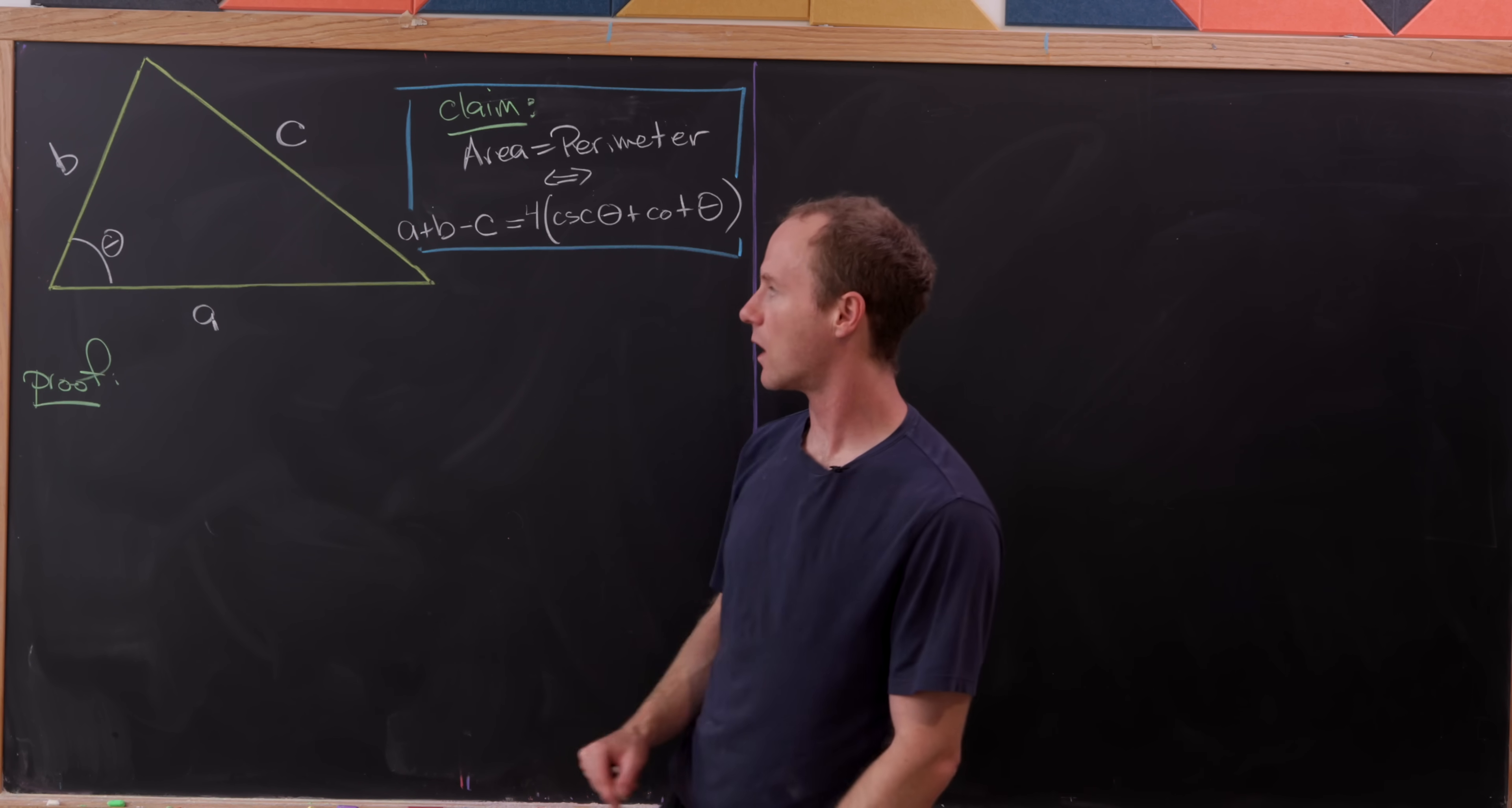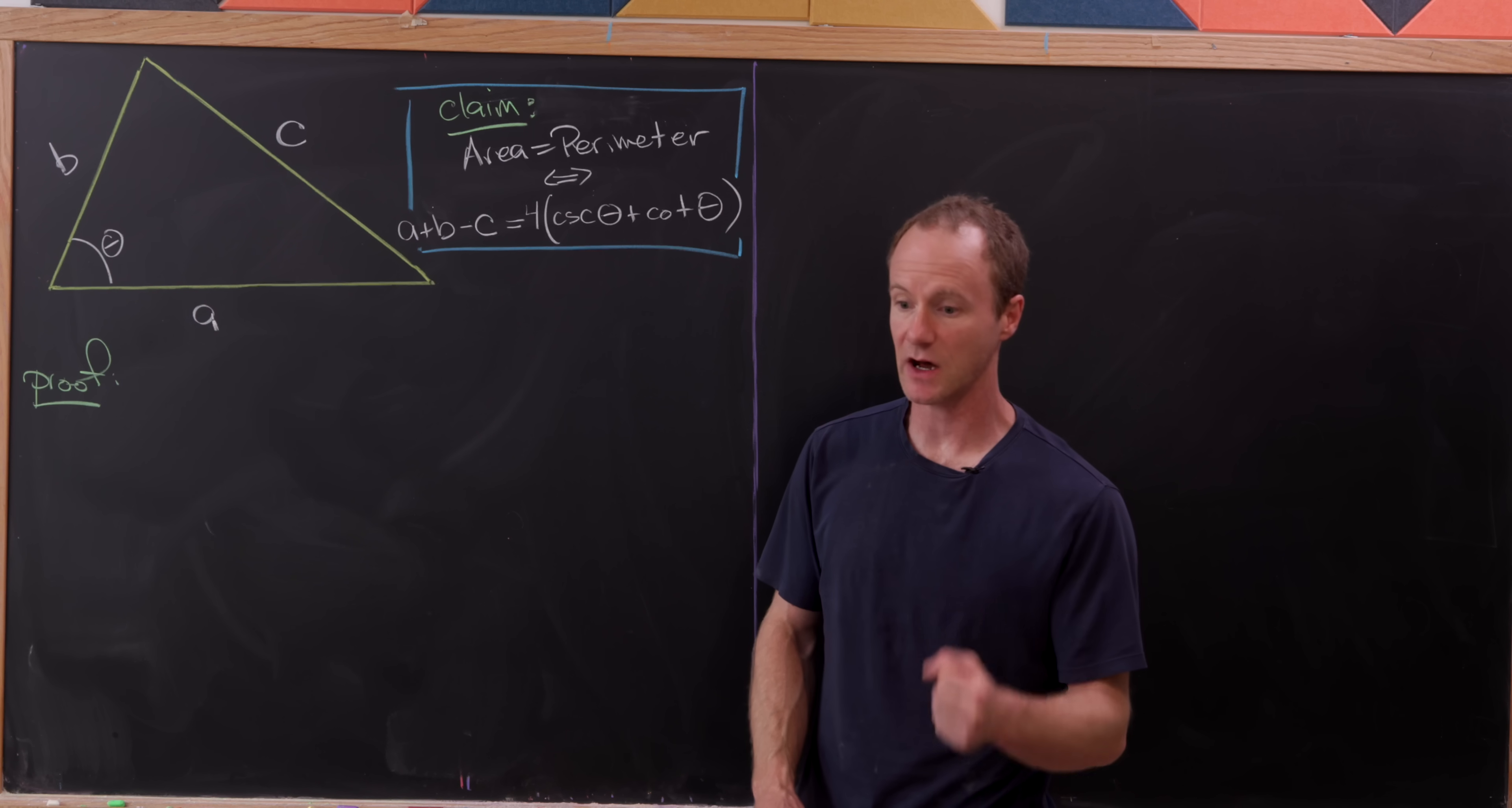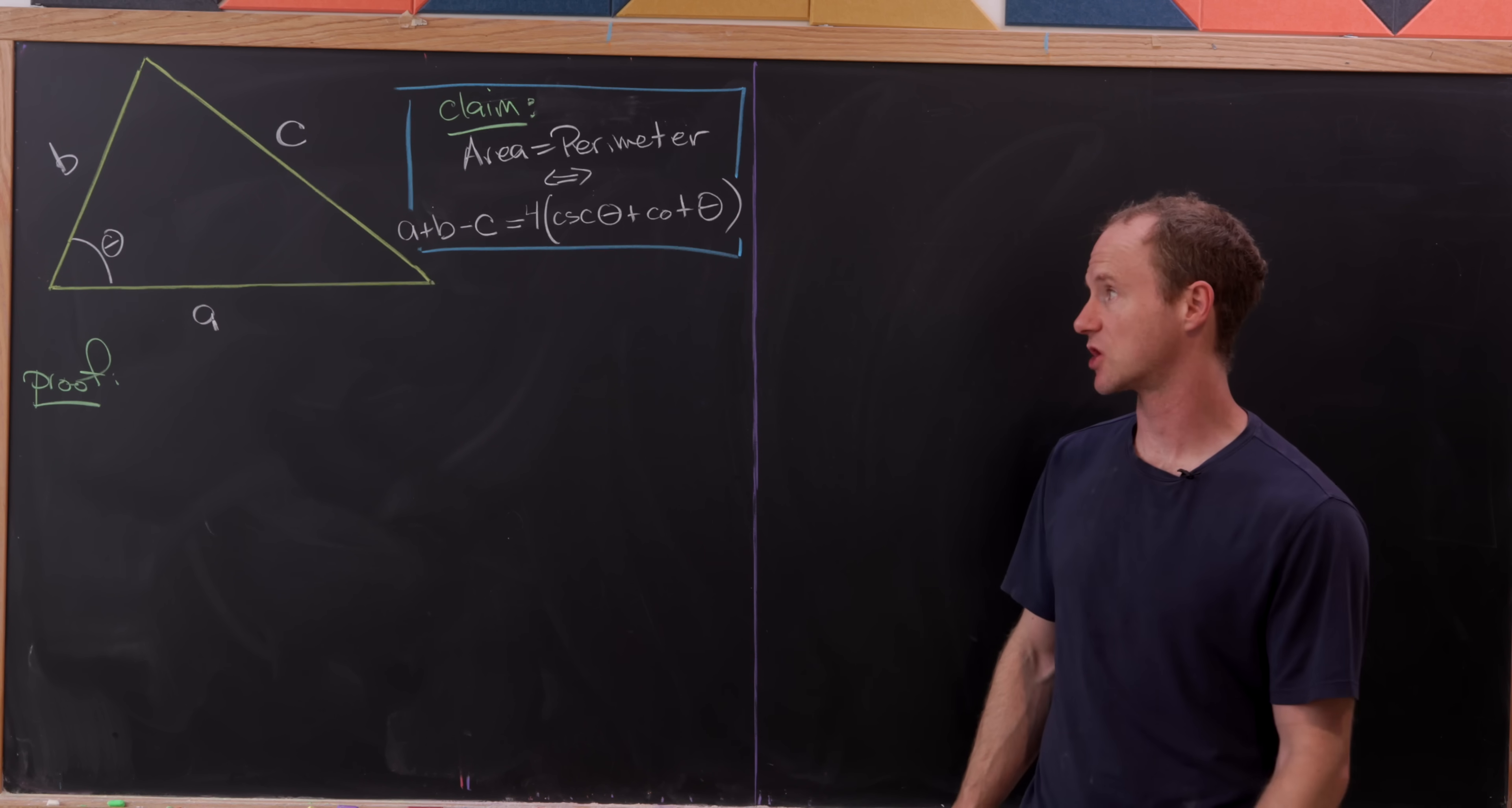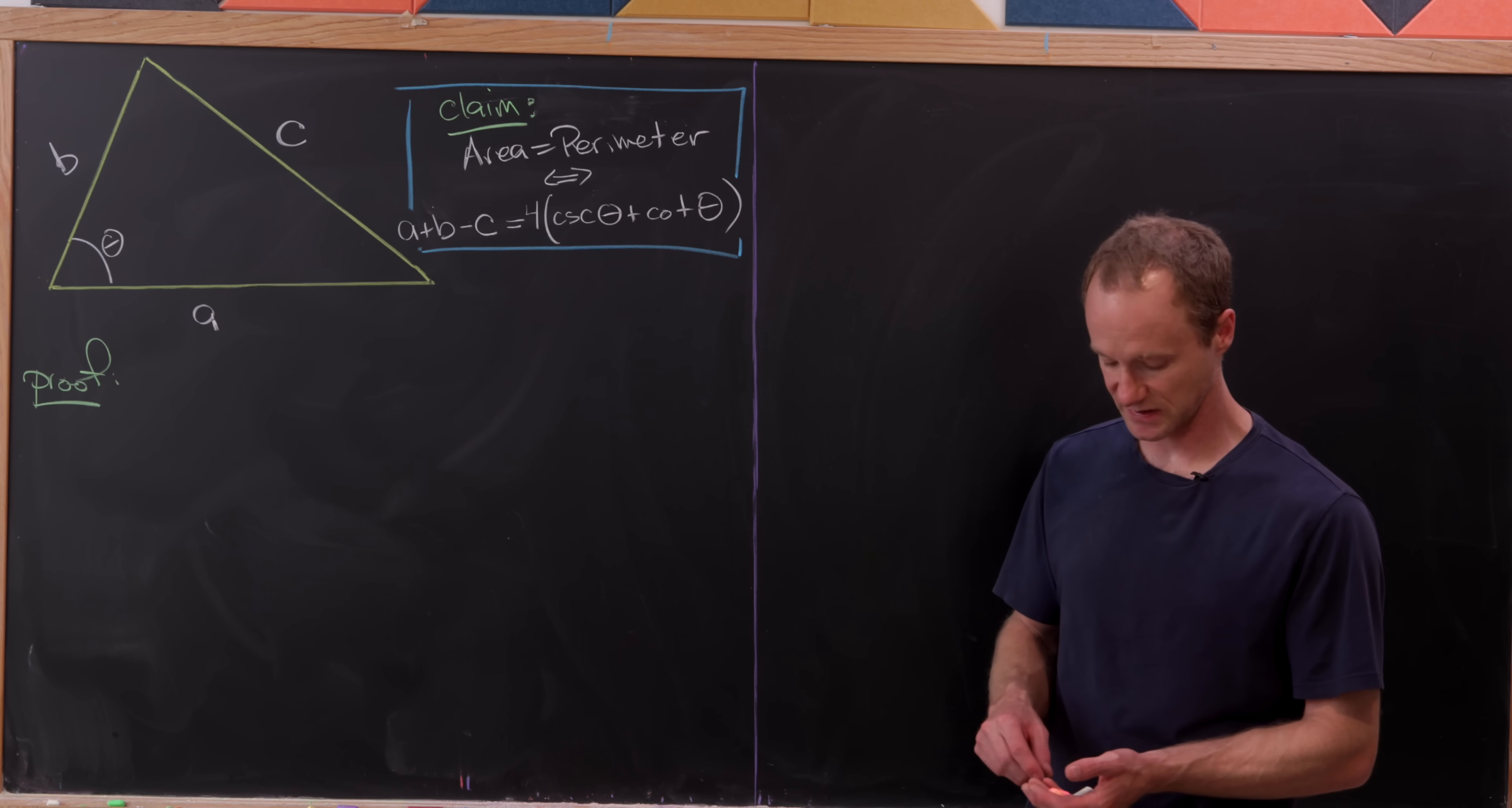And in fact, given the following setup where we have a triangle with side lengths a, b, and c, and the angle opposite c is theta, what we'll do is show that the area of this triangle equals the perimeter of this triangle if and only if a plus b minus c equals four times cosecant theta plus cotangent theta.